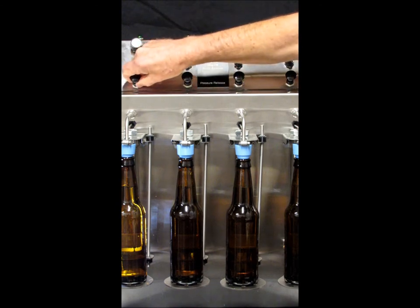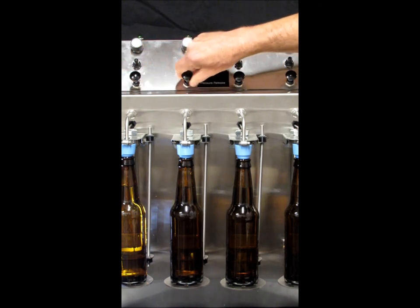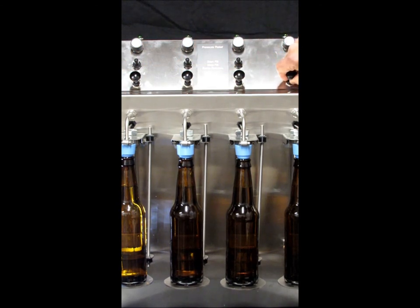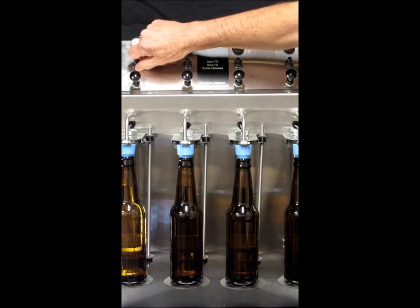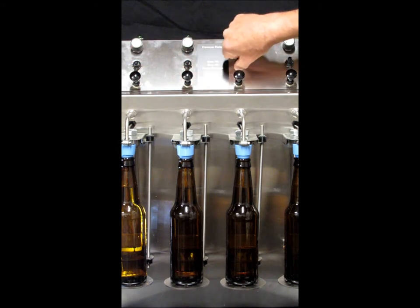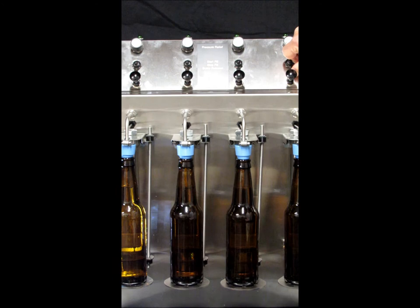As such, release the pressure. Now the pressure is released from all four bottles. Go to the bottom position of the toggle which releases the foot, and you can now remove the bottles and start the next filling cycle.